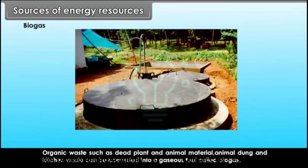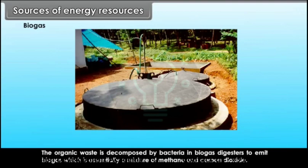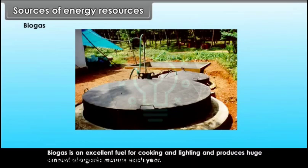Biogas: Organic waste such as dead plant and animal material, animal dung and kitchen waste can be converted into a gaseous fuel called biogas. The organic waste is decomposed by bacteria in biogas digesters to emit biogas, which is essentially a mixture of methane and carbon dioxide. Biogas is an excellent fuel for cooking and lighting and produces a large amount of organic manure each year.